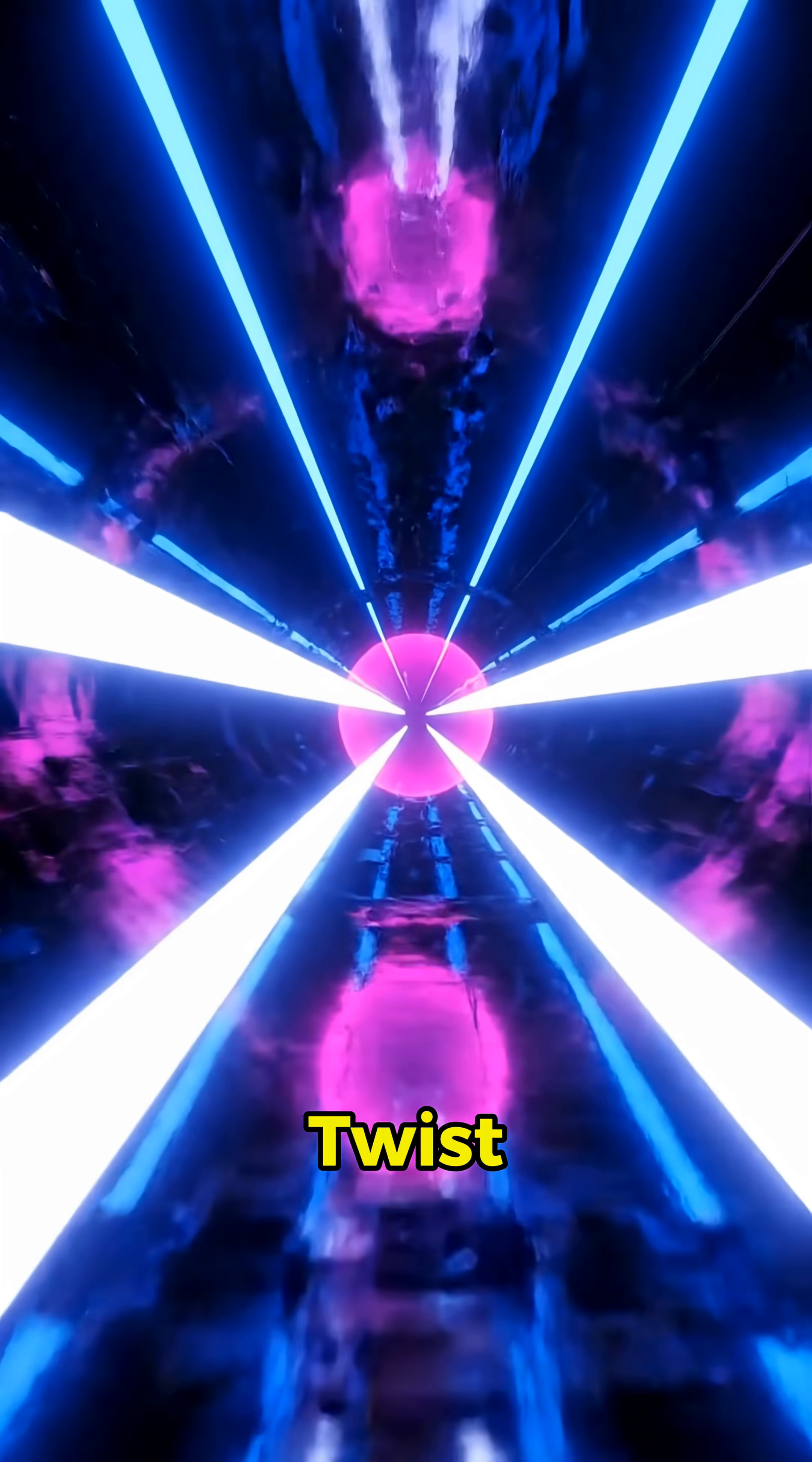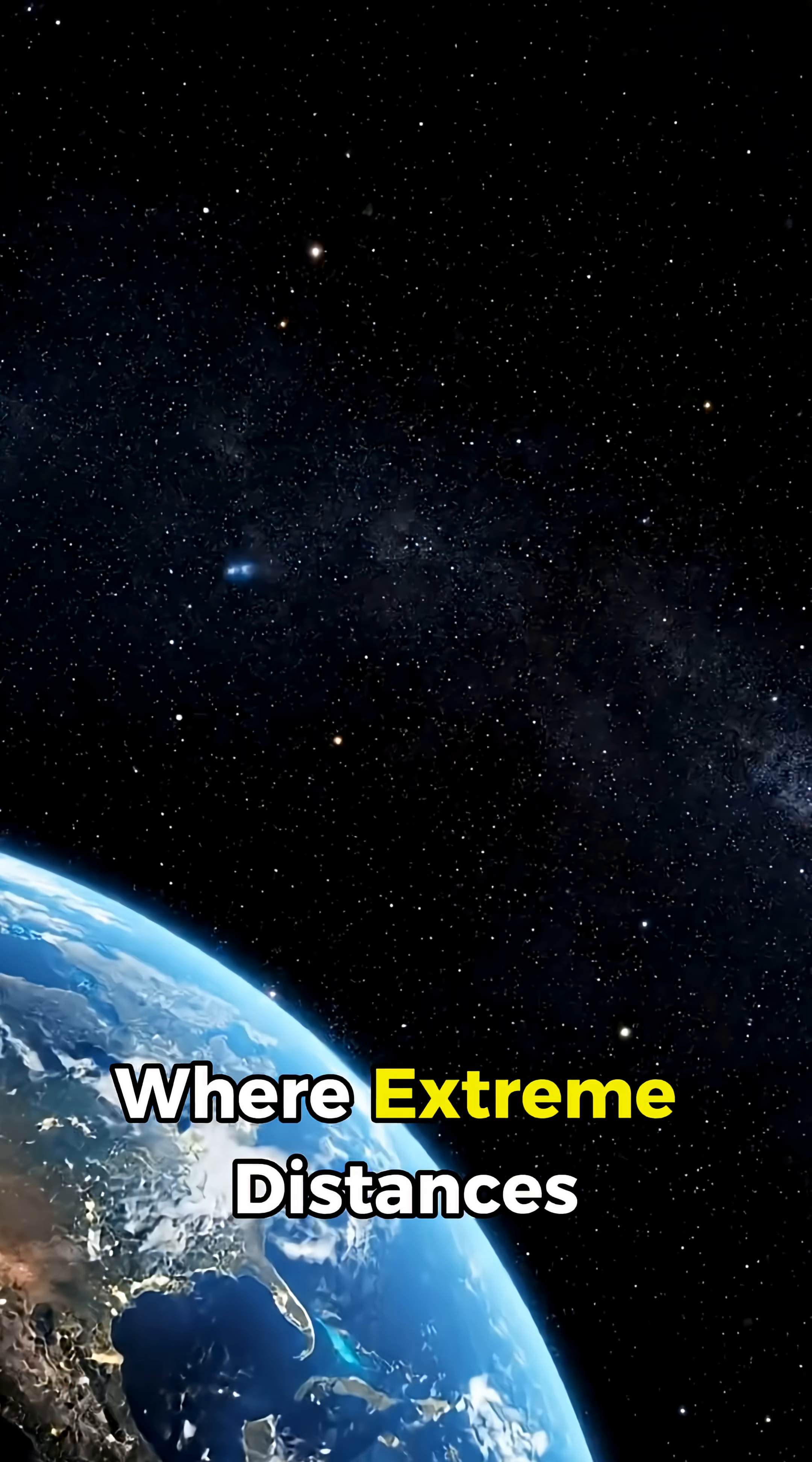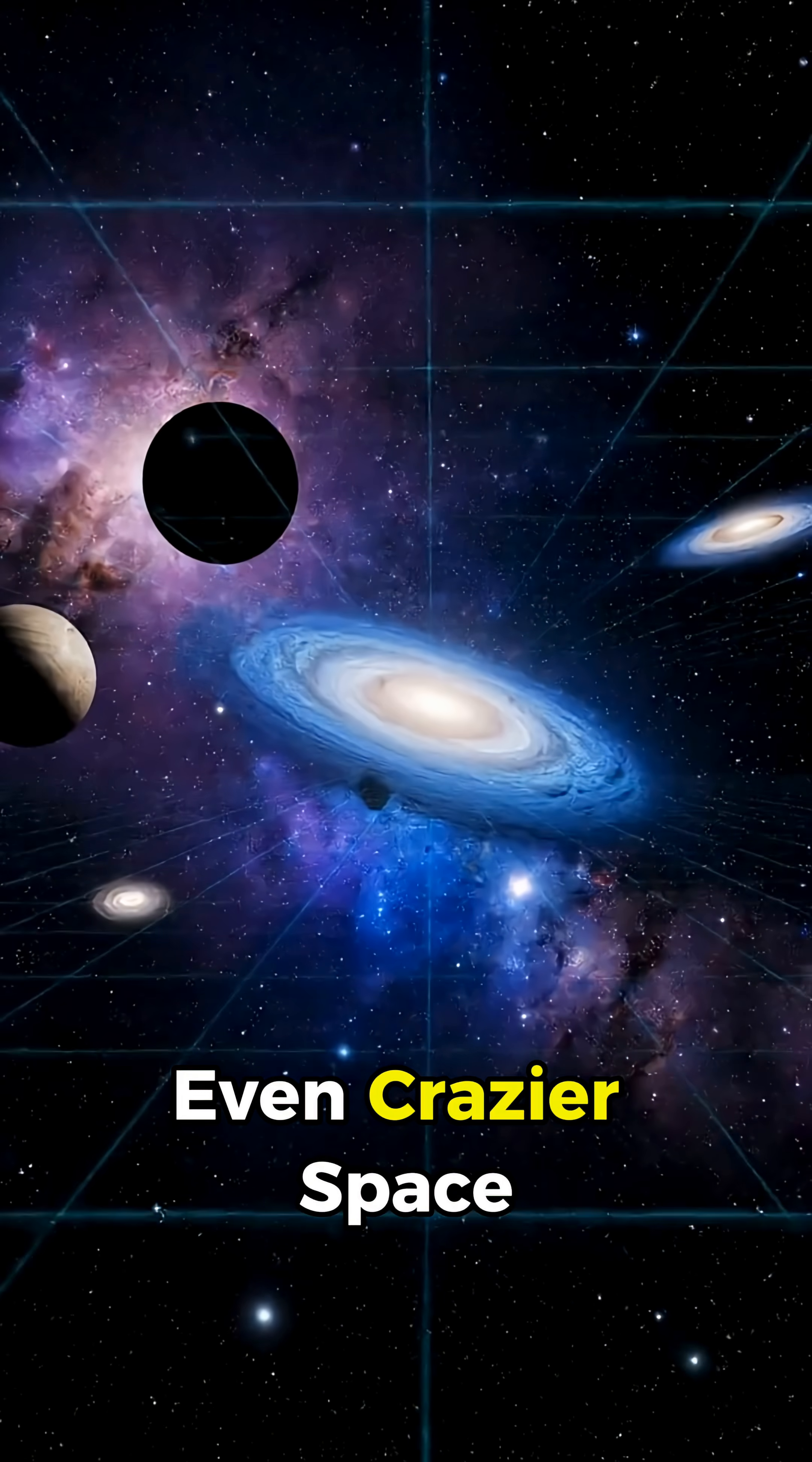But here's the twist. Nothing with mass is actually breaking the rule. What's happening is called apparent superluminal motion, where extreme distances, insane speeds close to light, and the angle toward our Earth team up to mess with our perception. Even crazier...